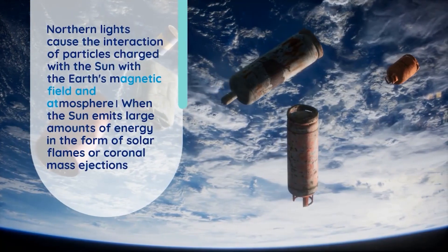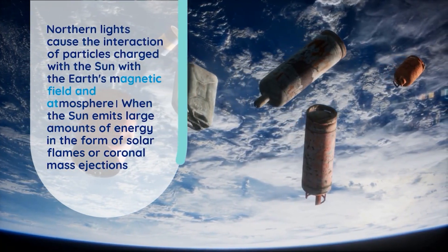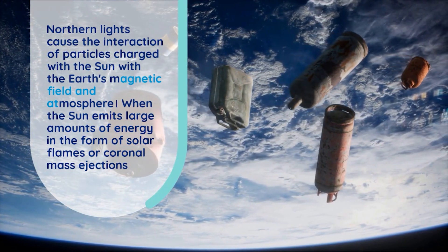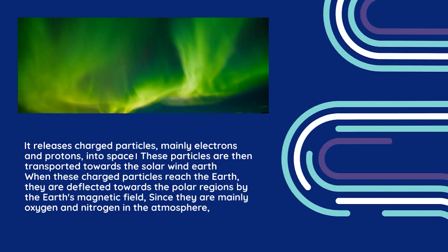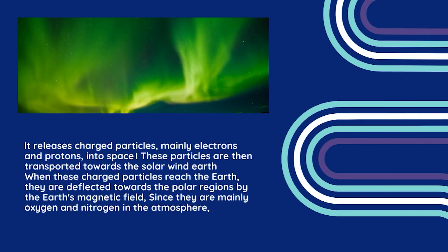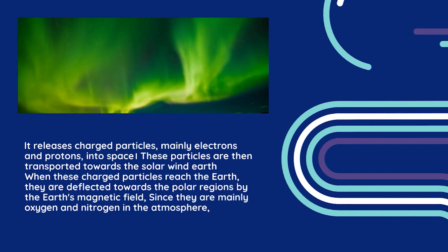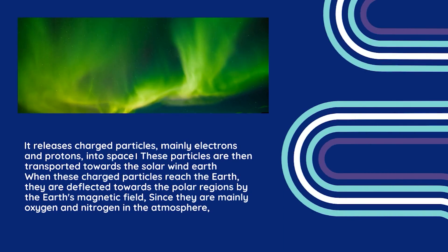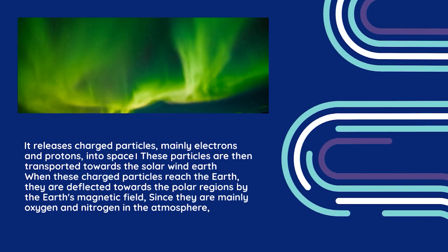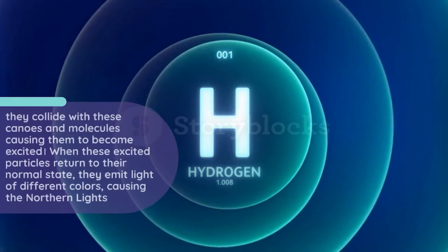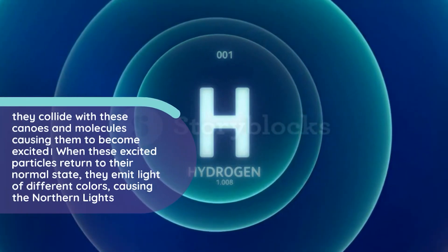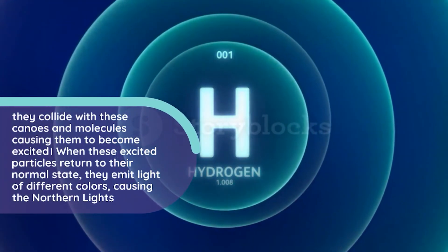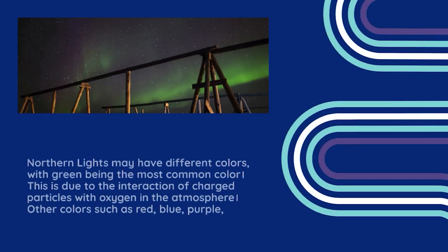Northern Lights are caused by the interaction of charged particles from the Sun with the Earth's magnetic field and atmosphere. When the Sun emits large amounts of energy through solar flares or coronal mass ejections, it releases charged particles — mainly electrons and protons — into space via the solar wind. These particles are deflected towards the polar regions by Earth's magnetic field, where they collide with oxygen and nitrogen atoms, causing them to become excited. When these excited particles return to their normal state, they emit light of different colors, producing the Northern Lights.